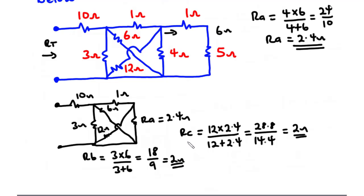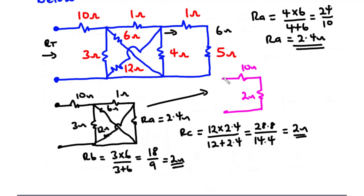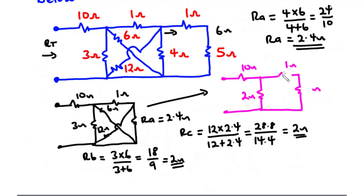Let's redraw the circuit again. We have 10 ohms, then Rb which is 2 ohms, then a 1-ohm resistor, then Rc which is 2 ohms. The 1-ohm and 2-ohm resistors are connected in series, so we clear them and replace them with a single resistor of 1 plus 2 equals 3 ohms.